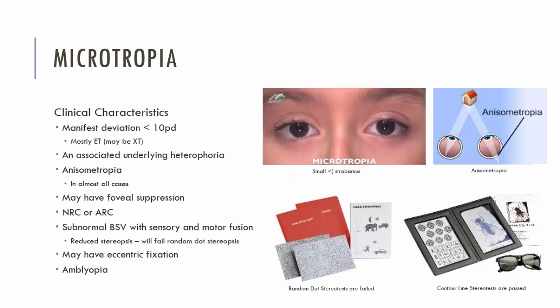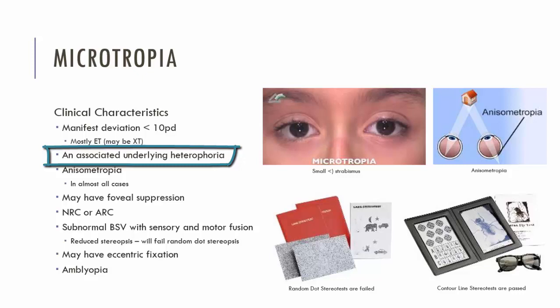Let's discuss in more detail the characteristics of a microtropia. We're expecting a manifest deviation of about 10 prism diopters or less. Some of these patients will also have an underlying heterophoria, so they'll not only have the manifest deviation but when you perform the alternate cover test, you'll find an even greater movement, indicating both a manifest and latent strabismus together. These patients can have this combination because they do have binocular functions and peripheral fusion.